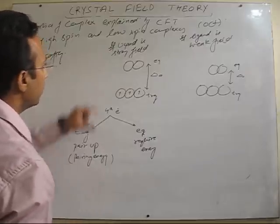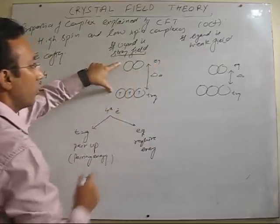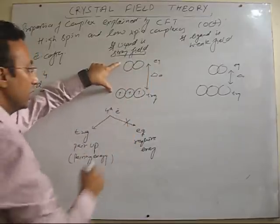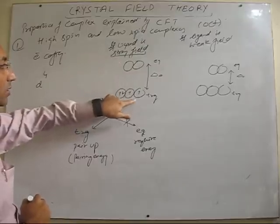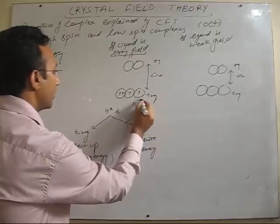Now, it is very simple to answer here. If delta is more, and because the ligand is strong, if delta is more, then electron will not jump to eg. Rather, it will pair. So, you get this type of arrangement. And, in this type of arrangement, total unpaired electron you will get is 2.